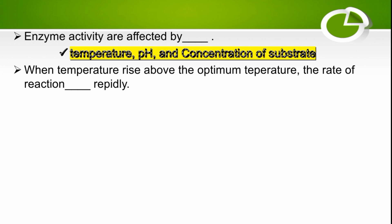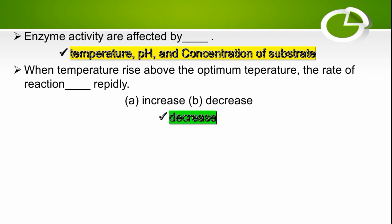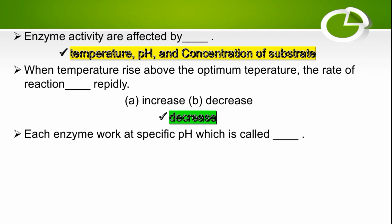When temperature rises above the optimum temperature, the rate of reaction decreases, because the enzyme stops working.